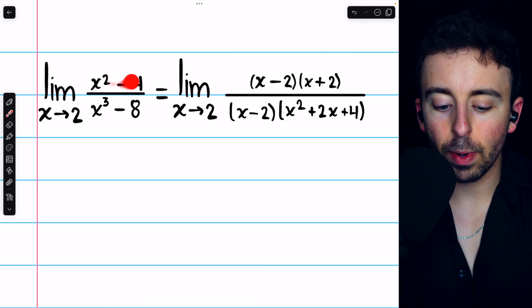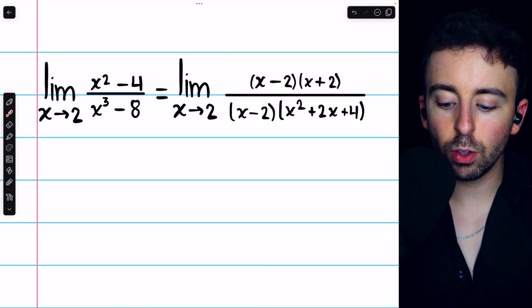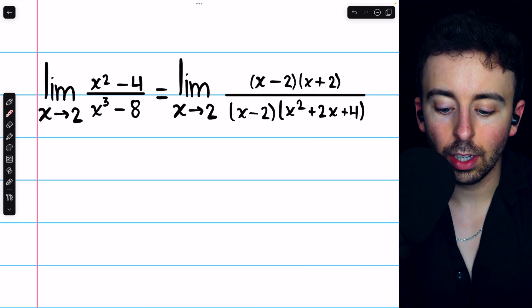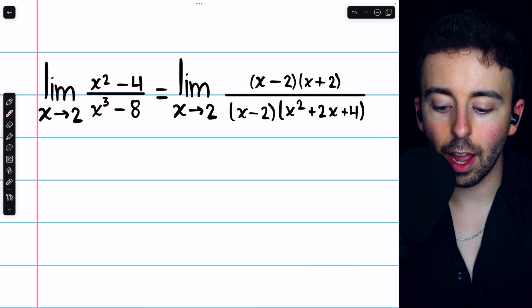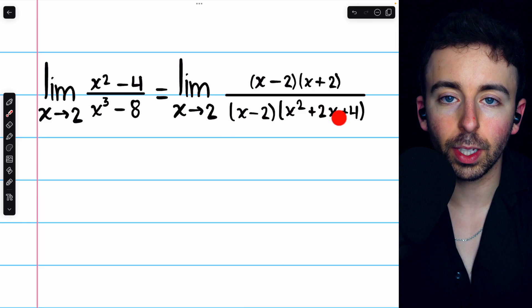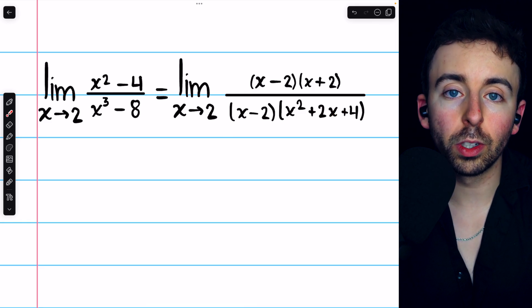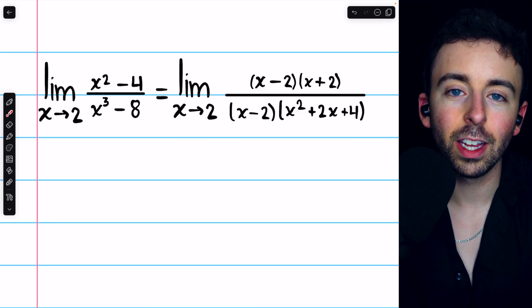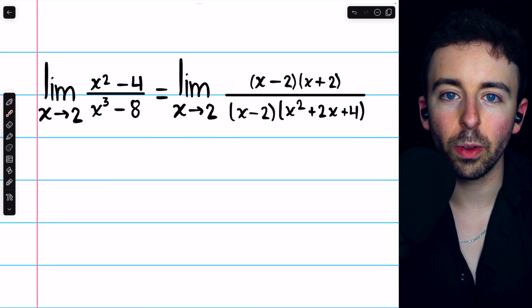Factoring x squared minus 4, we get x minus 2 times x plus 2. And factoring x cubed minus 2 cubed, we get x minus 2 times x squared plus 2x plus 4. If you don't know your difference of squares factorization or your difference of cubes factorization, study up. You want to make sure you know those.